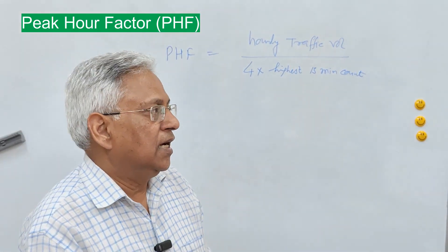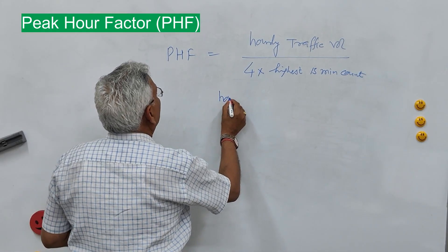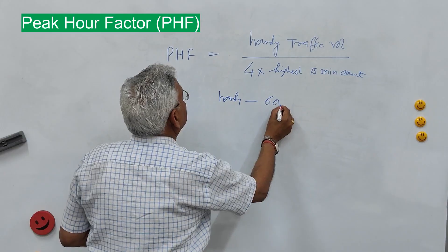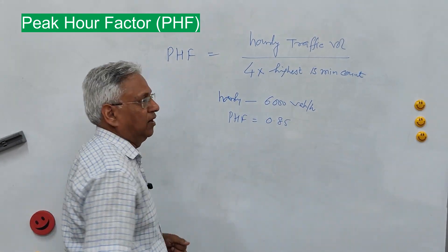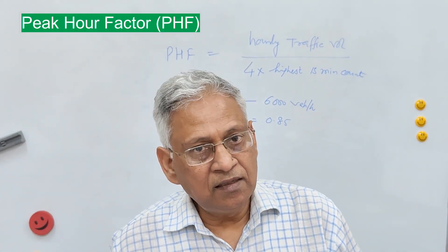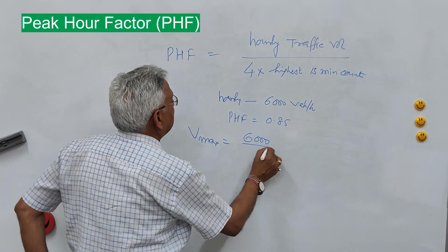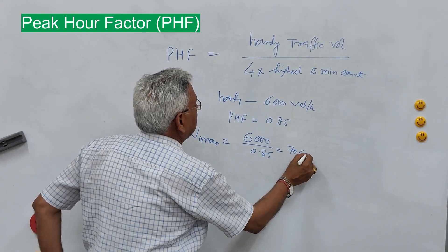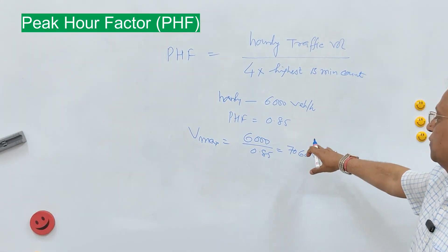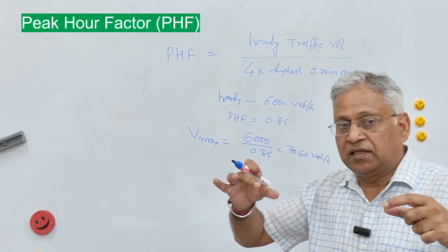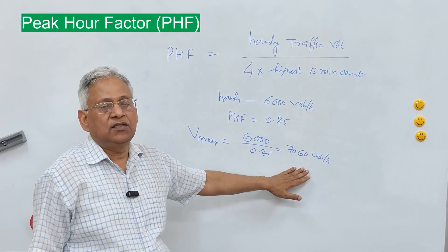Suppose the hourly traffic volume on a road is 6000 vehicles per hour and the peak hour factor is 0.85, calculated from historical data. Then the peak flow rate, V-max or Q-max, will be 6000 divided by 0.85, which equals 7060 vehicles per hour. This means the facility can experience a flow rate of 7060 in a short period within the hour and therefore should be designed for that maximum flow rate.